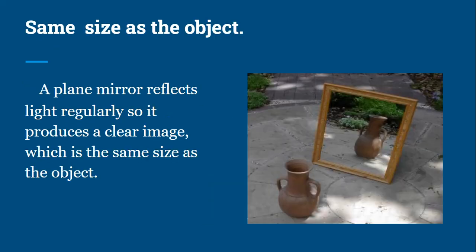When the image of an object is formed in a plane mirror, the size of the image formed is the same as the size of the object. It does not change if the object is kept too close or far away from the mirror.